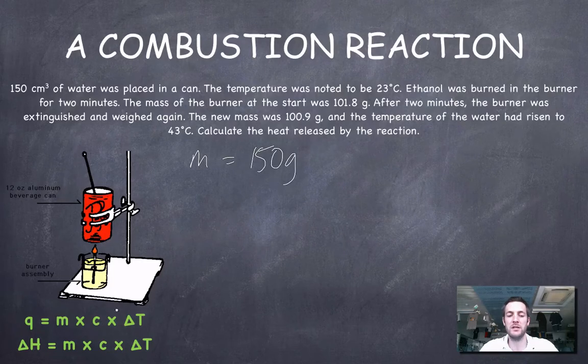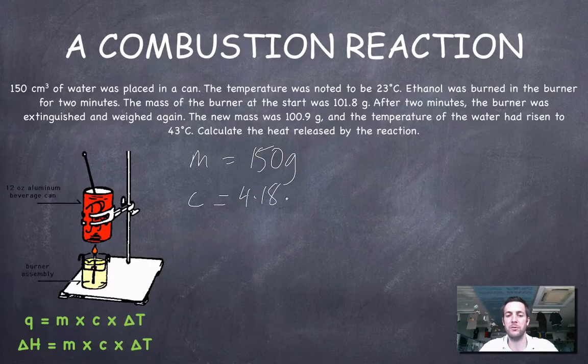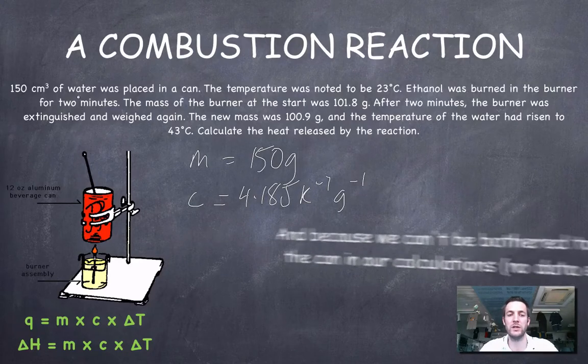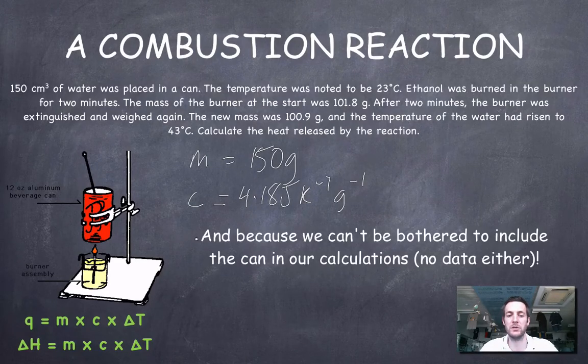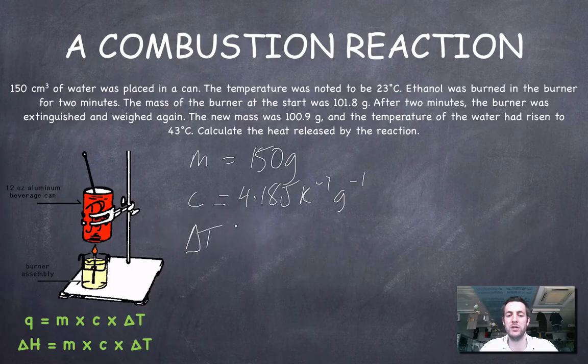What is C? Well, C is given in the data booklet. It's 4.18 joules per Kelvin per gram. Why are we using that? Because we're heating water and that's the specific heat capacity of water. What's the temperature change in Kelvin? Well, that's 20 Kelvin.